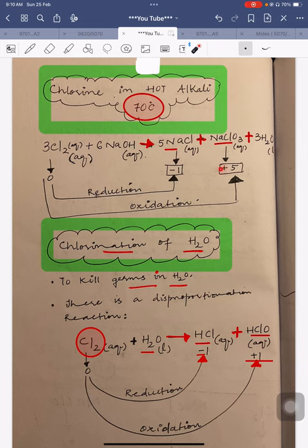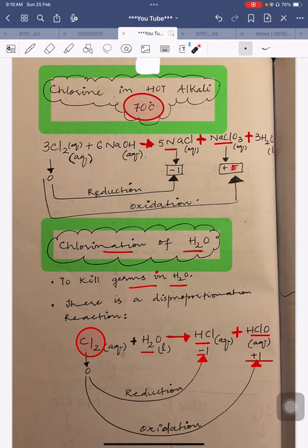Chlorine normally belongs to Group 7 (or 17) and typically shows an oxidation state of -1. But in this case it is reaching +5. So Cl is +5 in NaClO₃ and was 0 in Cl₂ — that is a clear oxidation. At the same time it goes to -1 in NaCl — that is reduction. The same element is undergoing both oxidation and reduction, confirming this is a disproportionation reaction.